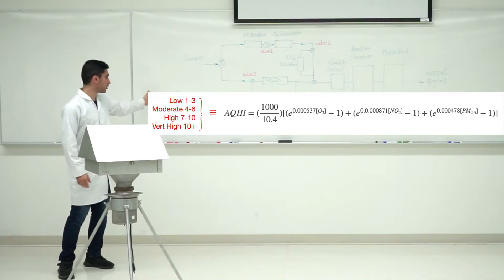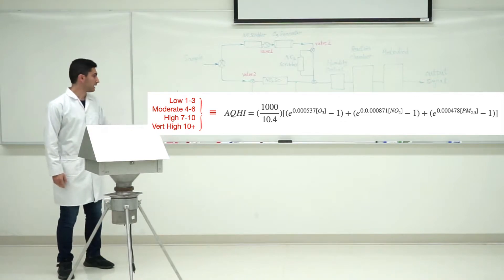AQHI is classified as low, moderate, high, and very high with specific domains. If we calculate AQHI and it's in the domain of 1 to 3, we call it low quality air. As you can see, the formula depends on ozone concentration, nitrogen dioxide, and particulate matter.